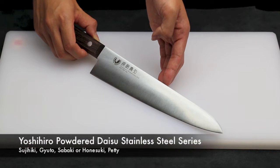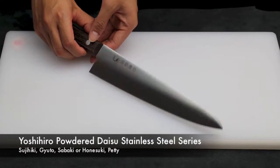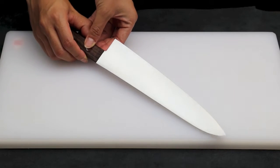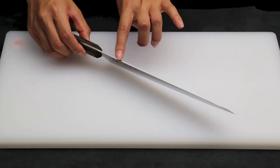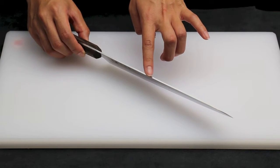The Yoshihiro Powder Dice Steel series. This series is made for our meat-loving customers. It features a laser-thin grind and a slim blade construction that is designed to cut through meat with precision and ease.